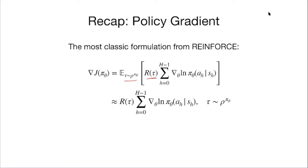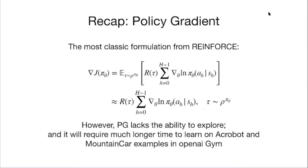To estimate the policy gradient, you sample one trajectory from this distribution, execute that policy in the system, get a trajectory, and compute the expression using that one trajectory. This is an unbiased estimate of the policy gradient. You all tried it in the homework and it worked pretty well on CartPole, but I noticed some of you tried it on two other environments: Acrobot and Mountain Car — and the natural policy gradient you implemented is going to take a long time to succeed on those.